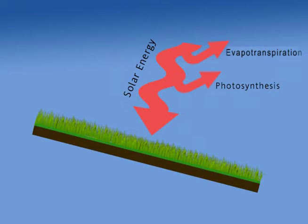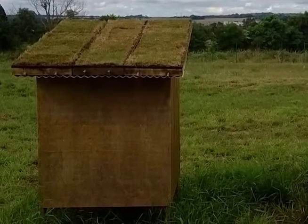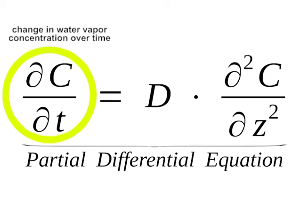It's important to know how much energy goes into evapotranspiration and photosynthesis, because then we will know how much energy will be available to warm the roof surface. That will allow us to establish the effect of the green roof on temperature. Mathematically, both processes can be modeled using a partial differential equation that predicts the concentration of water vapor in the air. Knowing this concentration, we are able to quantify the amount of heat energy taken away from directly warming the roof.